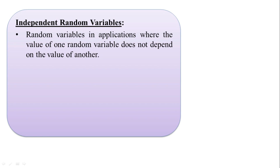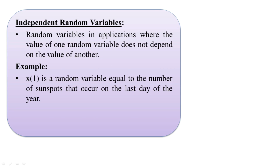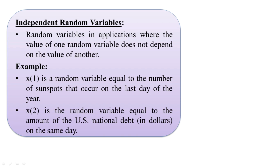For a better understanding, consider an example from the textbook: assign random variable x₁ to the number of sunspots occurring on the last day of the year, and random variable x₂ to the value of the US national debt on the same day. Although both occur on the same day, they have no relation or connection. The value of x₁ will not be affected by changes in x₂, or vice versa. Hence we call them independent random variables.